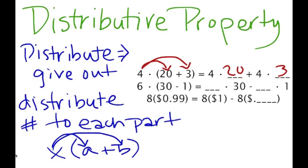If I distribute 6 into 30 minus 1, I give 6 to the 30 and 6 to the 1, so that's 6 times 30 minus 6 times 1. In the last example, 8 times 99 cents — think of it as 8 times 1 dollar minus 1 cent, because 1 dollar minus 1 cent is 99 cents. So this becomes 8 times 1 minus 8 times 1 cent.